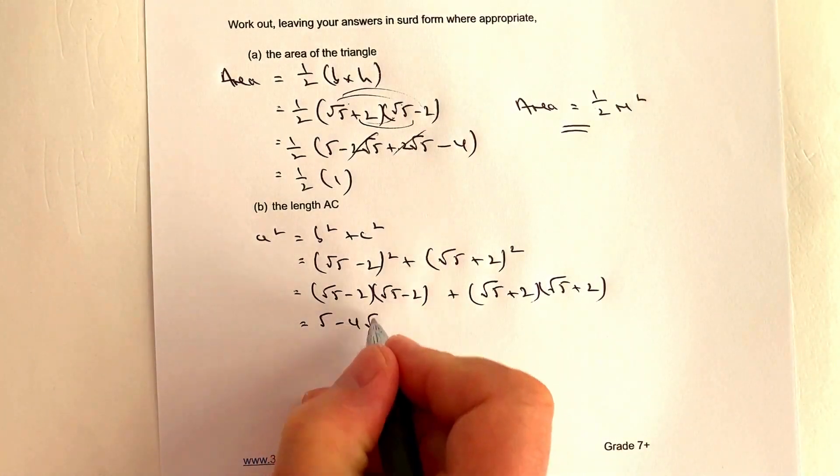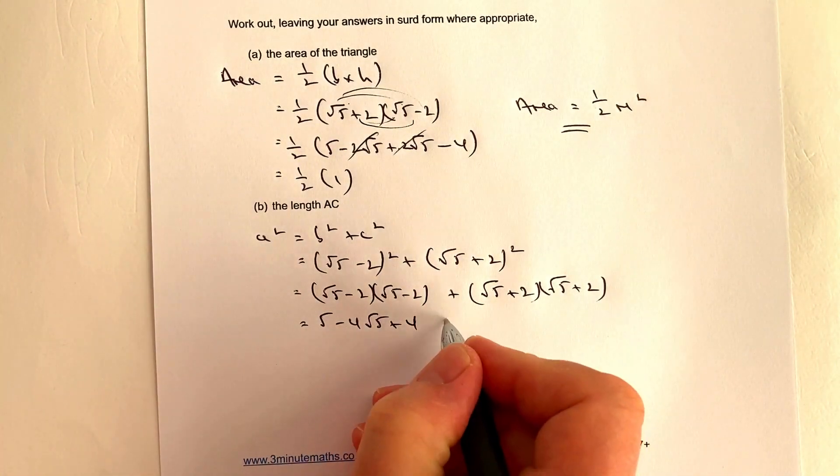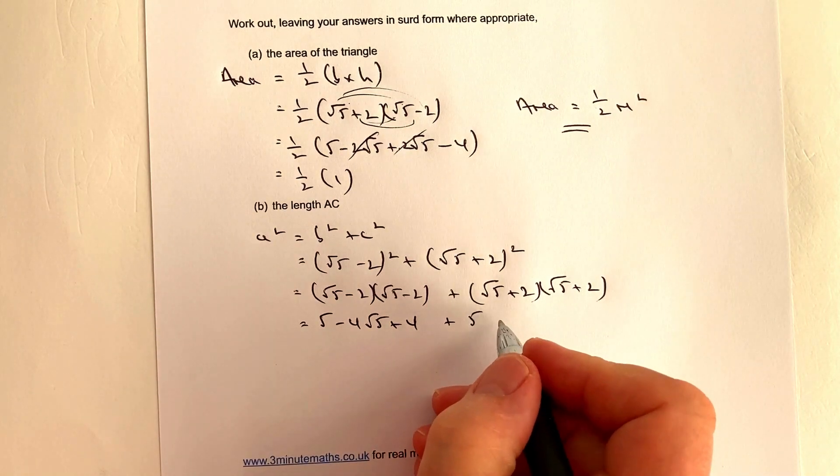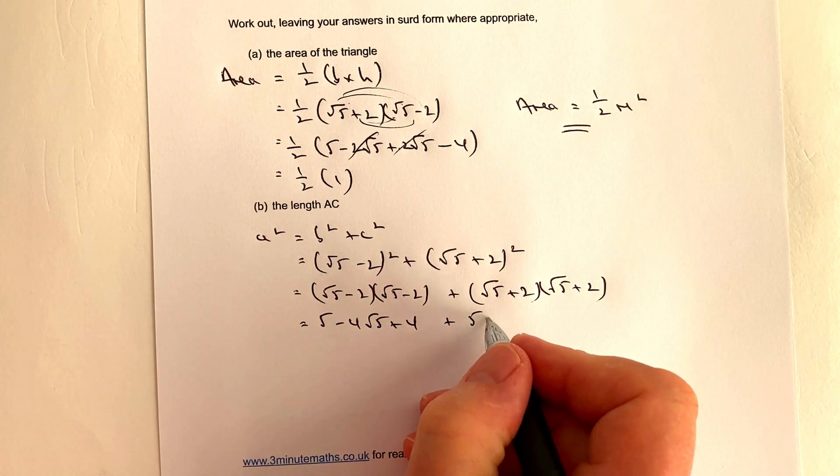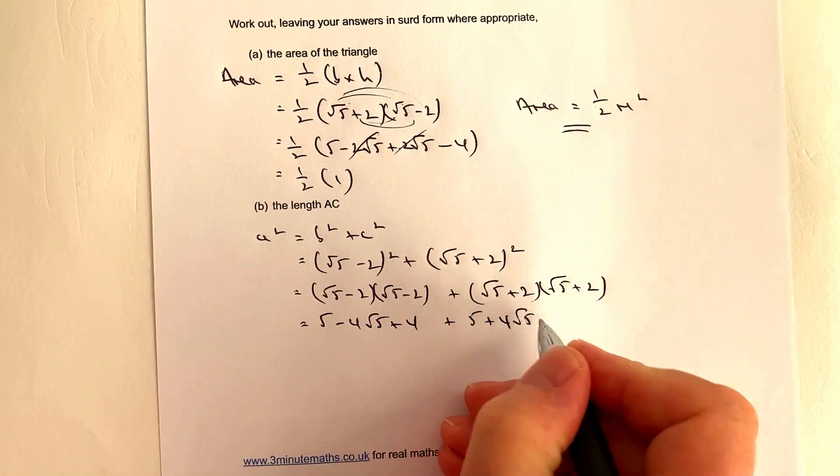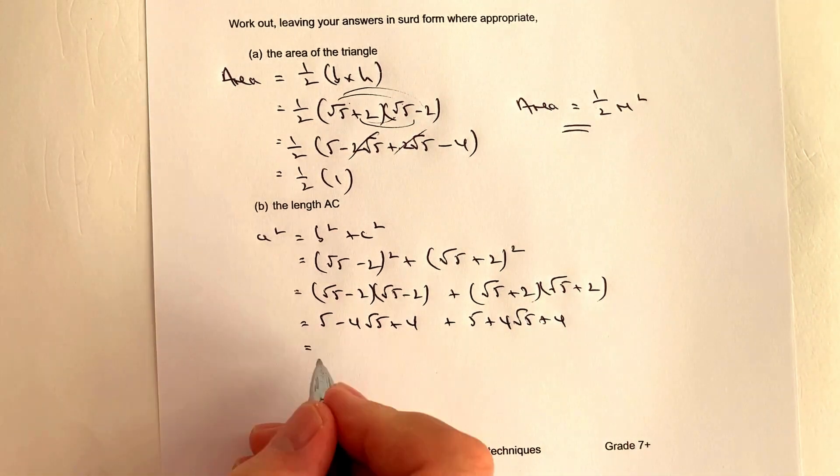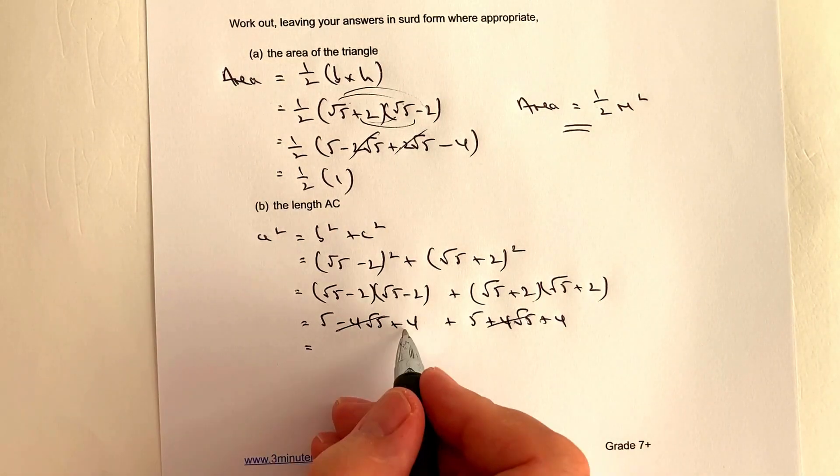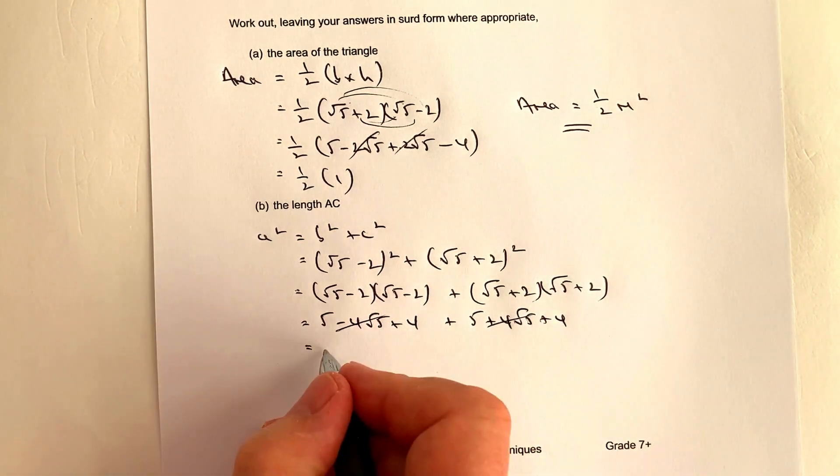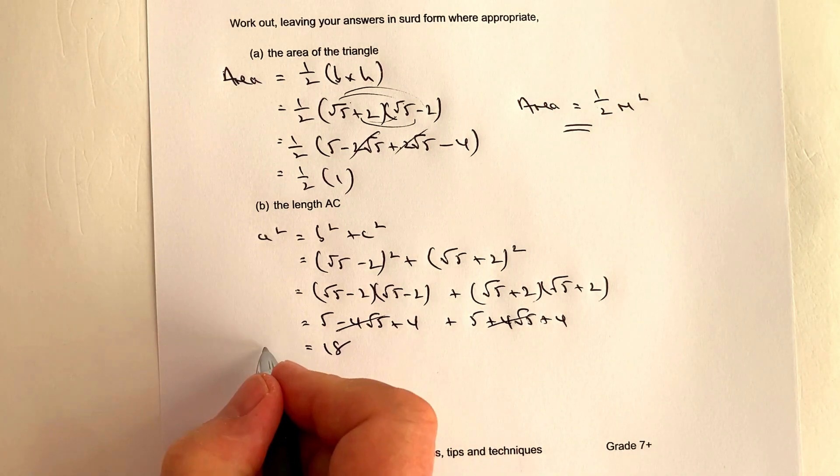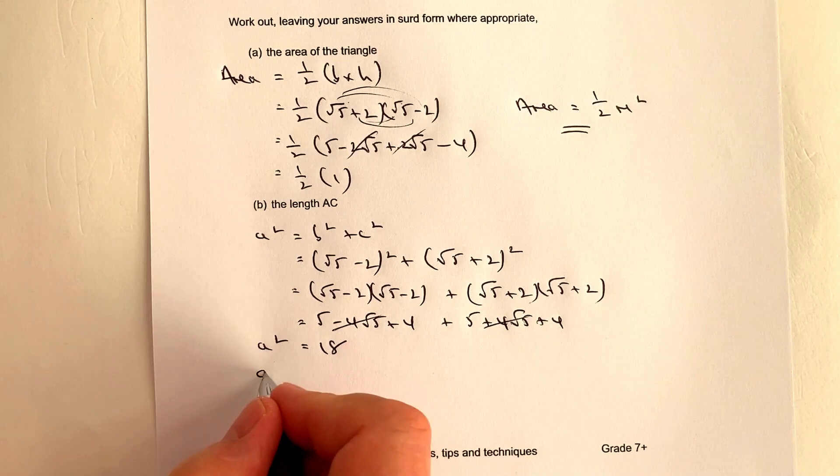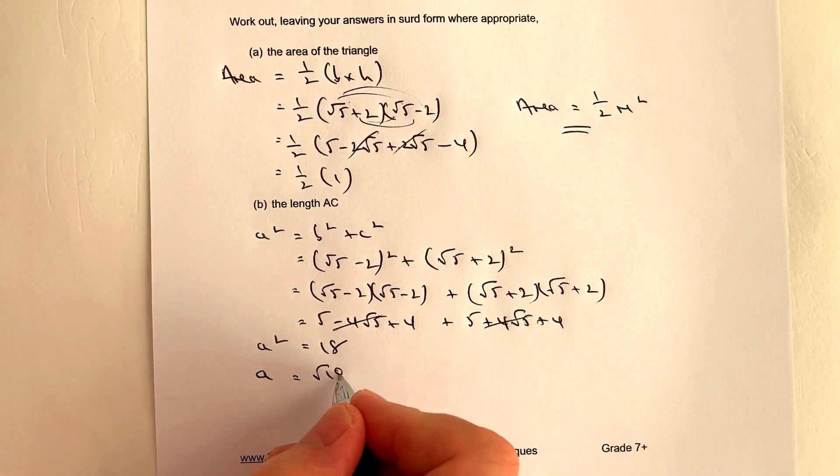The second one is 5 + 4√5 + 4. Adding them together: -4√5 cancels with +4√5. We have (5 + 4) + (5 + 4) = 9 + 9 = 18. So a² = 18, which means a = √18.